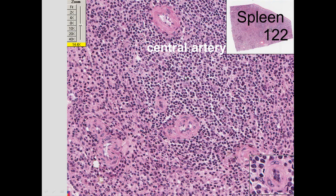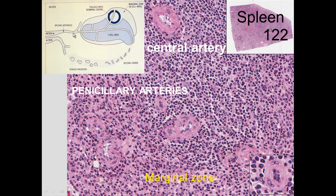The marginal zone is important because it is where the penicillar arteries are located. 'Penicillar' means branching — the arteries branch out there. Blood coming through the periarterial sheath is then emptied into the splenic cords. The penicillar arteries open and close to regulate the dumping of whole blood into the splenic cords between the sinuses.